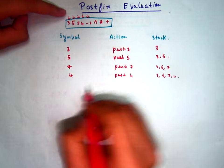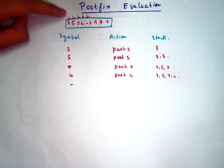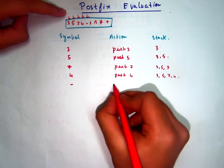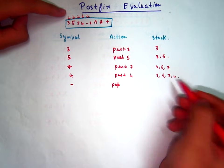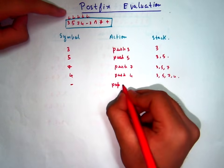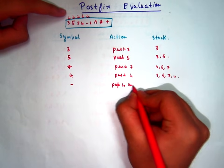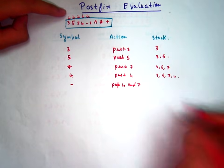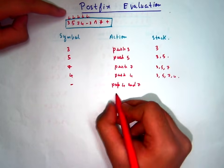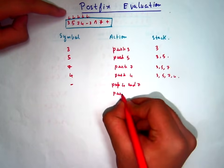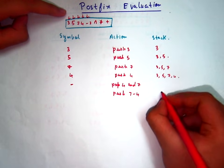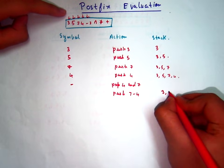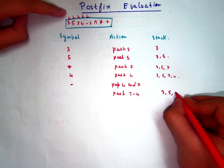Then comes minus. This is an operator. So what we have to do is pop out the last two elements that were in this stack. Pop 4 and 7, and push their resultant. Push 7 minus 4. So the stack will look something like this.